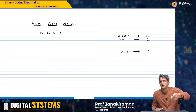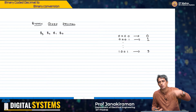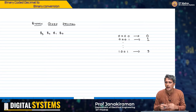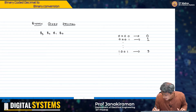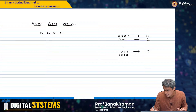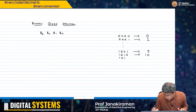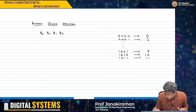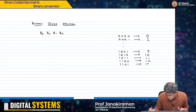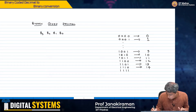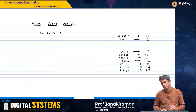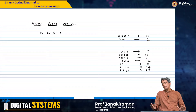However, when you go to the numbers A, B, C, D, up to F, that whole thing breaks down and you need to somehow represent that number differently. So 1010 has to become 10, 1011 has to become 11, 1100 becomes 12, 1101 becomes 13, and 1111 becomes 15. Essentially, this is the mapping that you need.